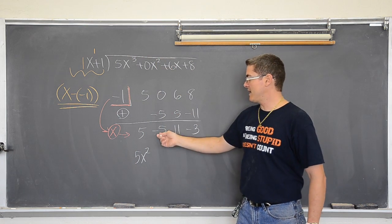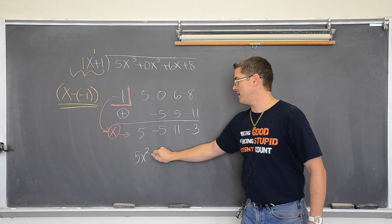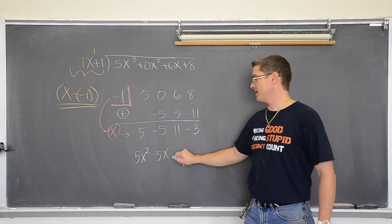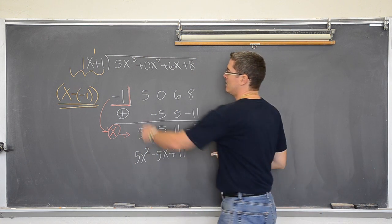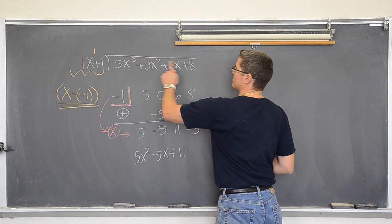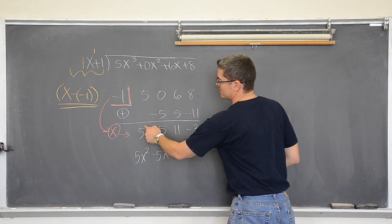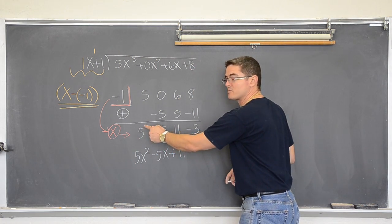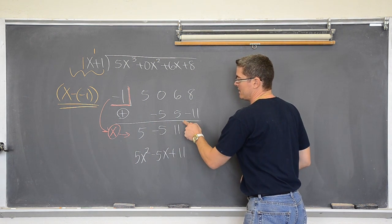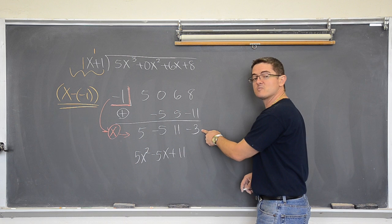Your exponents are counting down. Still counting down. So negative five x plus a constant of eleven. Remember the original exponents were three, two, one, and a constant. Well now it is not three but two. It has been reduced by one. Two, one, constant. So this must be the remainder.